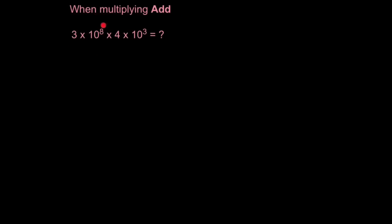So look here. We have 3 times 10 to the 8 multiplied by 4 times 10 to the 3. What's the answer? Step 1. Multiply the whole numbers first. So deal with this and this first. So 3 times 4 is 12.